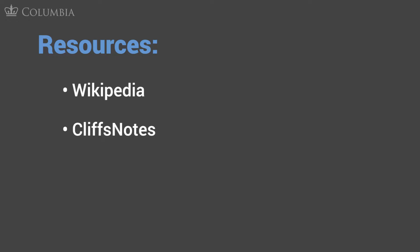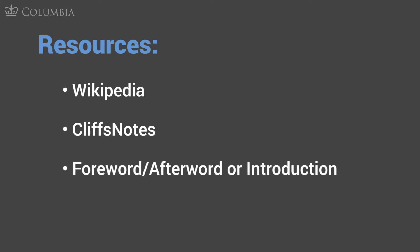There are a few good and easy-to-find resources you can use to answer these questions — things like Wikipedia, the CliffsNotes version of the text, a foreword, afterword, or introduction if you have a regular version of the text, or even a good old-fashioned paper encyclopedia. While we don't recommend using Wikipedia for real research, when you're just trying to give yourself background context, it can be a really helpful resource.